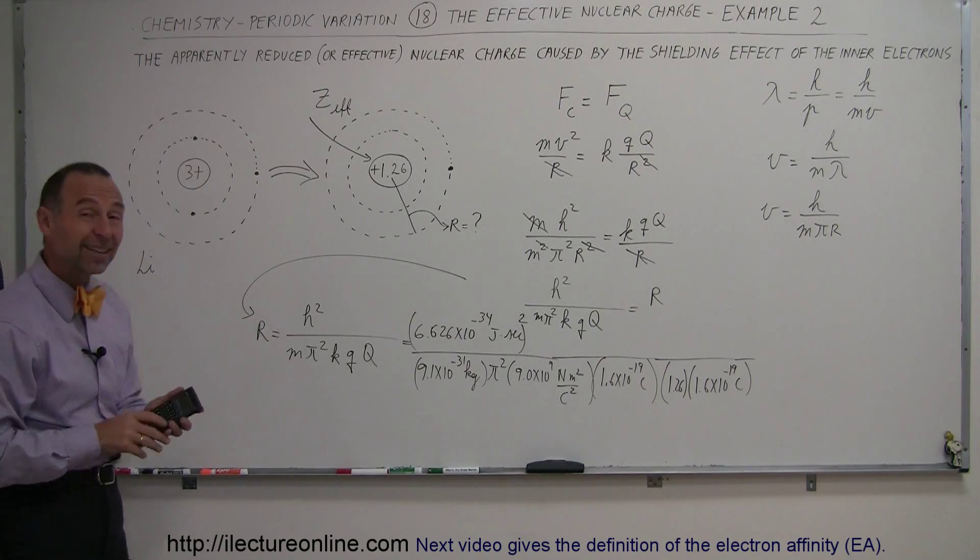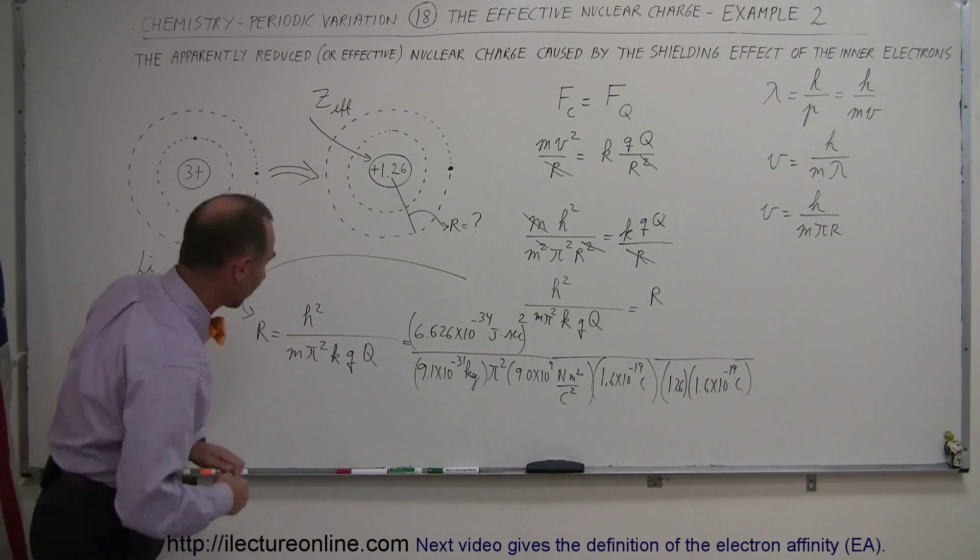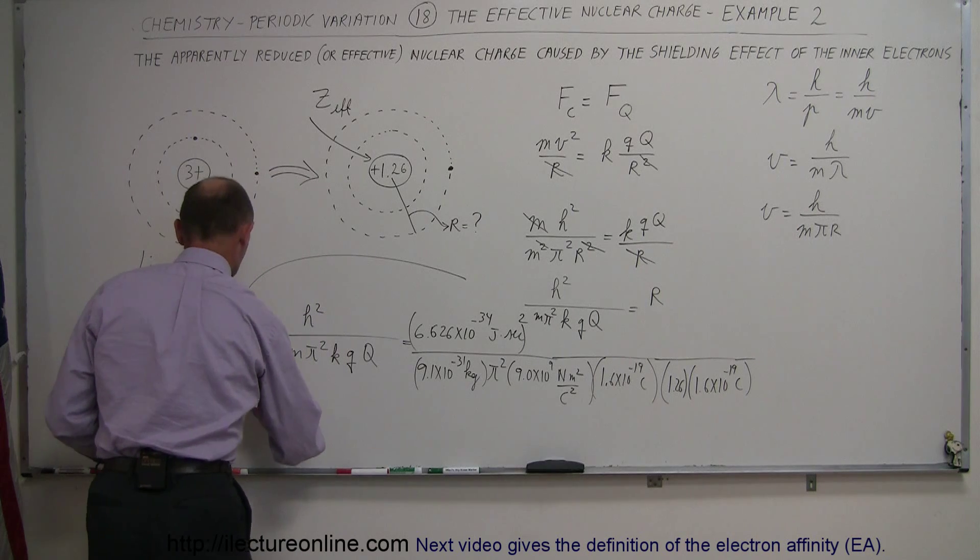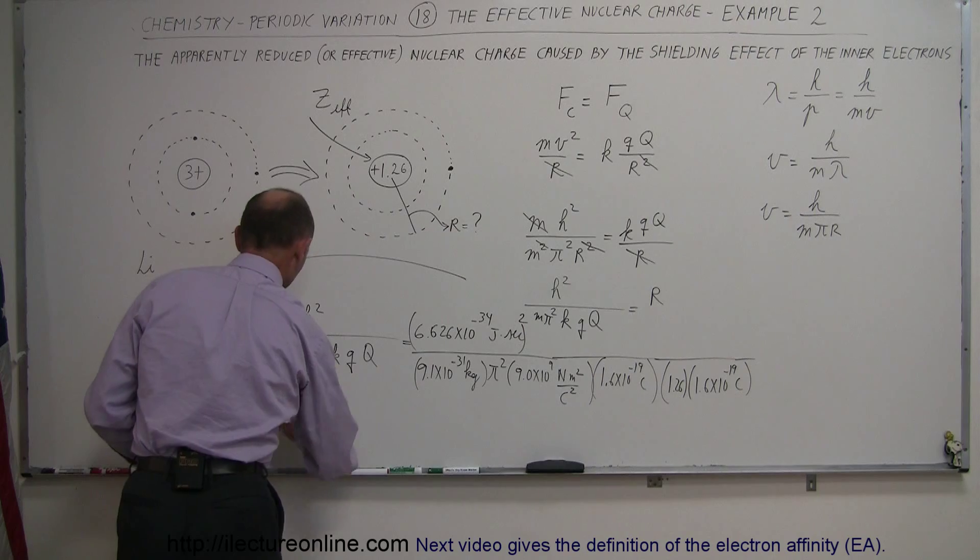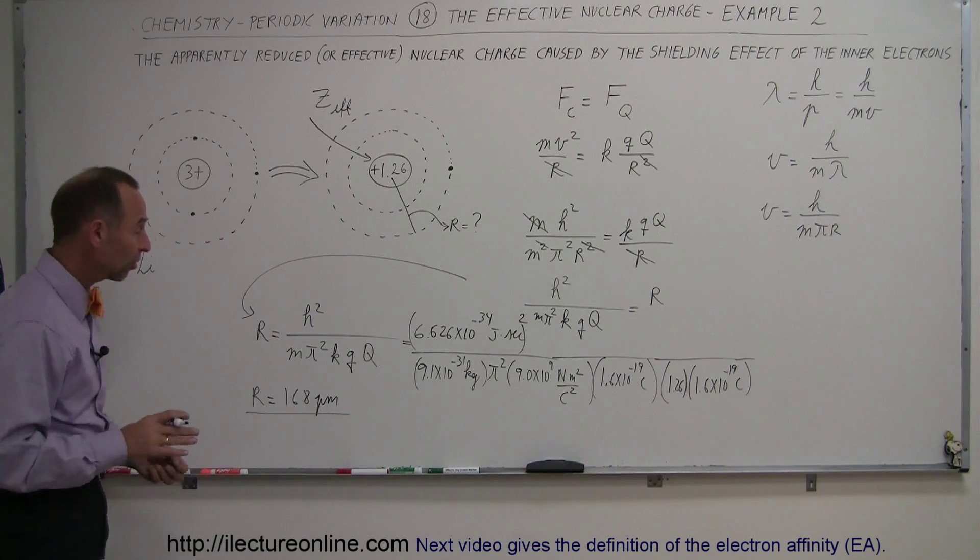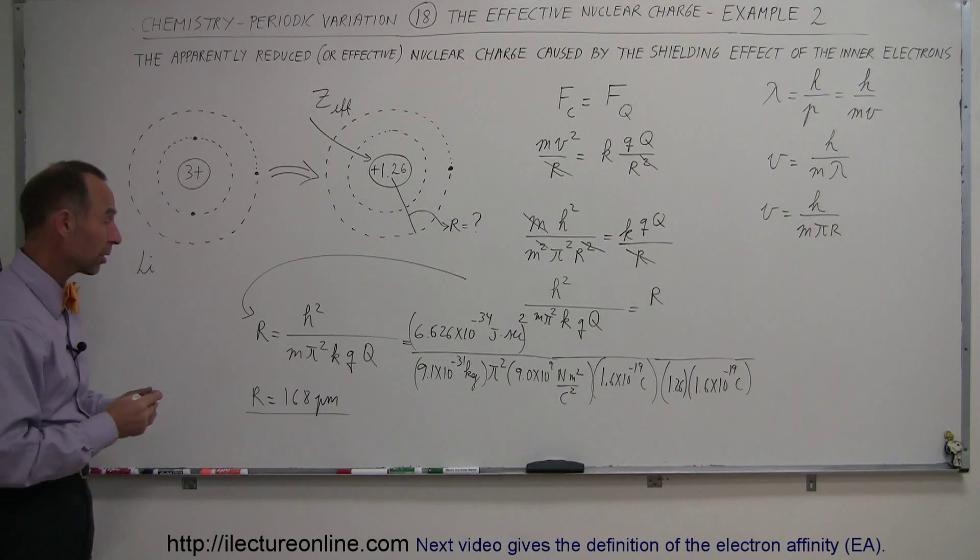So r equals 168 picometers, which very closely matches the radius of lithium atom that you'll find in your textbook.